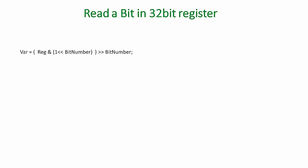On the screen you can see the technique or formula used for deriving the bit status of a particular bit in the register. Here we have declared and used a variable called 'var'. 'var' is a user-defined variable, and this is the register from which you want to read. This is the bit number that you want to mask and find the status of. Let's take bit number 4 — you want to read its status whether it is 0 or 1.